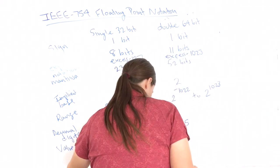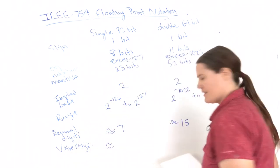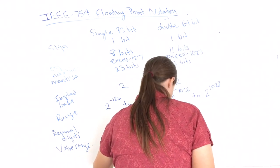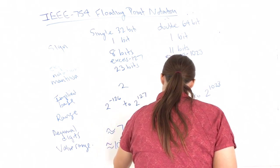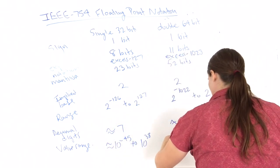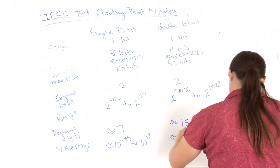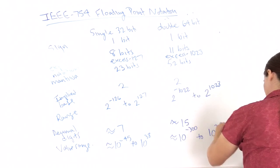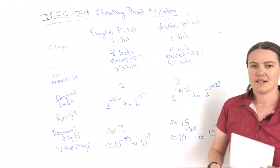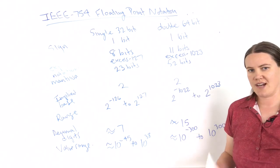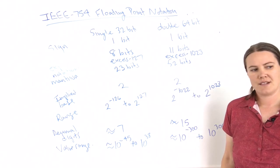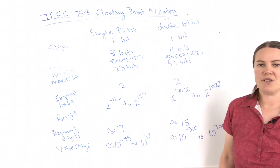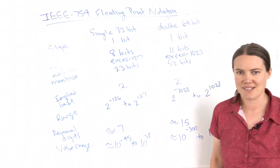The approximate value range is 10⁻⁴⁵ to 10³⁸ for 32-bit, and 10⁻³⁰⁰ to 10³⁰⁰ for 64-bit. I'm going to do one more video showing you how to convert a decimal number into IEEE 754 32-bit floating point notation, so look for that next. Thanks.